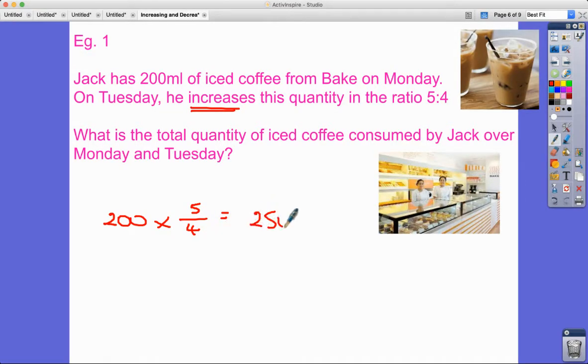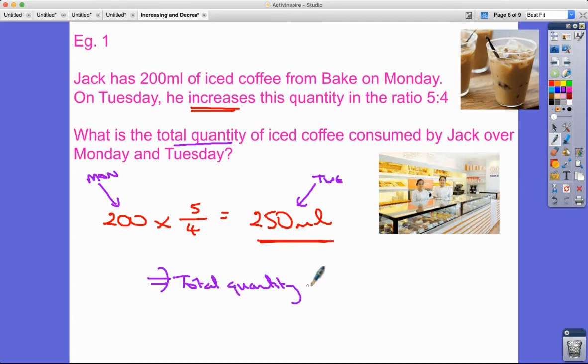But then we need to read the question properly. We haven't finished. On Monday he had 200 mils and Tuesday 250 mils. What was the total quantity consumed over Monday and Tuesday? So therefore, total quantity is gonna be 200 plus 250, which is 450 mils - almost half a litre of iced coffee. Perhaps that's healthy, perhaps not.